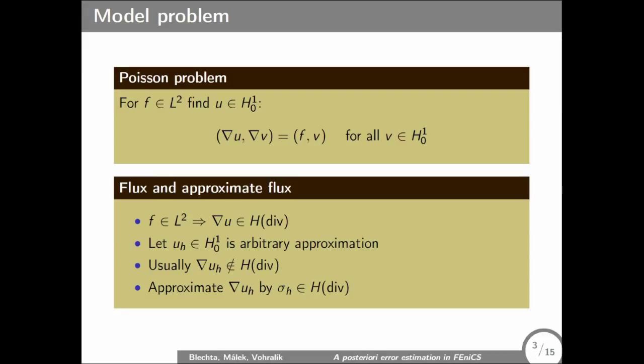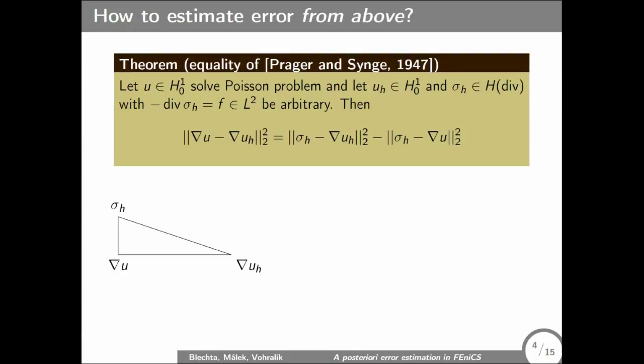So the model problem, of course, Poisson. If we have right-hand side which is square integrable, we read from the equation that the flux gradient U has square integrable divergence. But for conforming approximations, this is usually not true. And this is the key point of the lecture, trying to reconstruct some H(div) flux from gradient U_h.